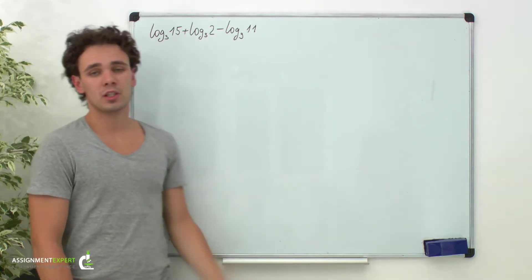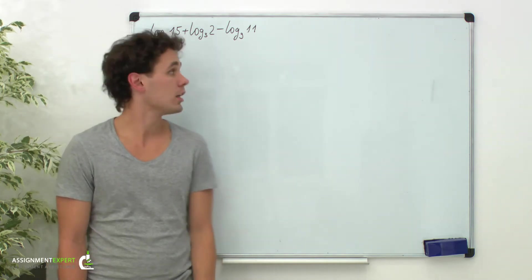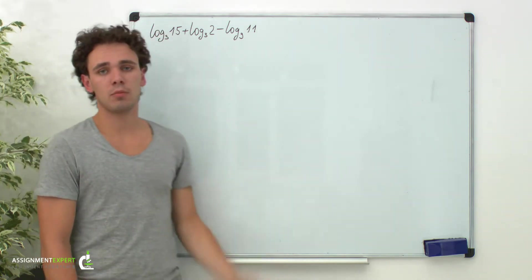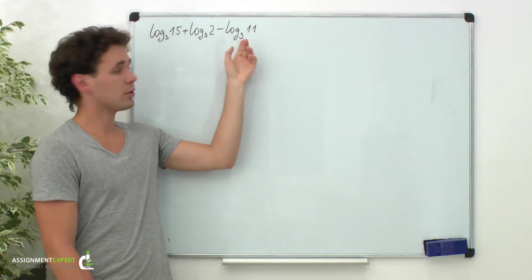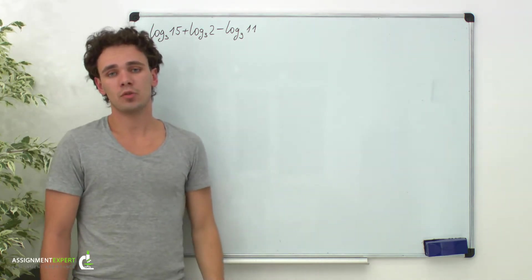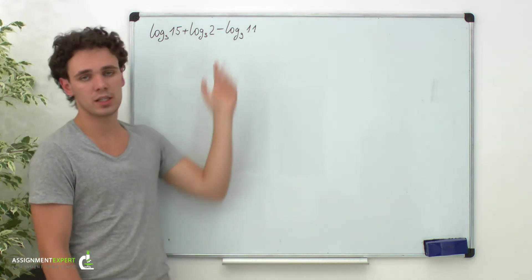We have the following expression and we need to condense it to a single logarithm. Here we have the algebraic sum of certain logarithms, two of them with base 3 and one with base 9. So we can't right away use rules for logarithms, instead we need to change the base of the last logarithm.